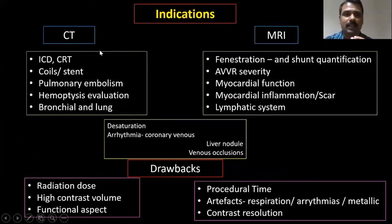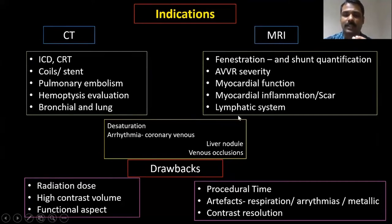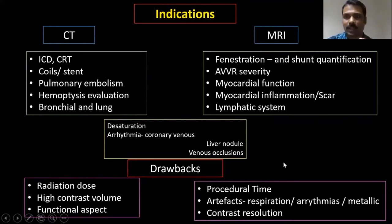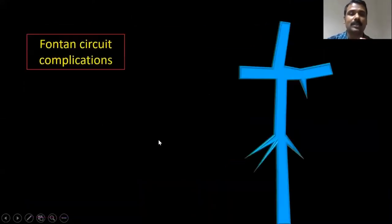How to choose between CT and MRI? If there are metallic substances, or we need to image the lung and tracheobronchial tree, CT is preferred. In most other situations, MRI is preferable, as it provides additional information regarding function, inflammation, scar, and the lymphatic system. CT is preferred in the presence of desaturation symptoms. For assessment of liver nodules and venous occlusion, MRI is preferred, though both can be used interchangeably. Drawbacks exist for both modalities.